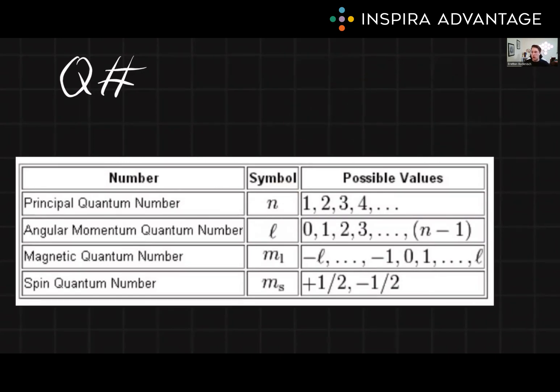Finally, we have the azimuthal quantum number, also known as the angular momentum quantum number, because it's easier to say. We symbolize this with a cursive L. And this is defining the shape of the orbital and has integer values from zero to n minus one. So what this means, if we have an n of three, the only possible numbers we could have for L would be zero, one, and two.